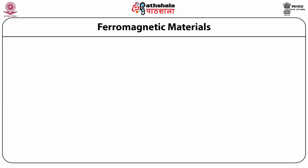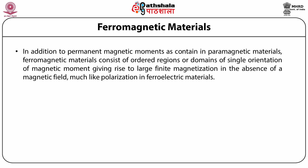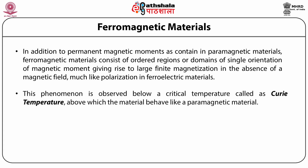In addition to permanent magnetic moments as contained in paramagnetic materials, Ferromagnetic materials consist of ordered regions or domains of single orientation of magnetic moment, giving rise to large finite magnetization in the absence of a magnetic field. This is similar to the polarization in ferroelectric materials. This phenomenon is observed below a critical temperature called Curie's temperature, above which the material behaves like a paramagnetic material.